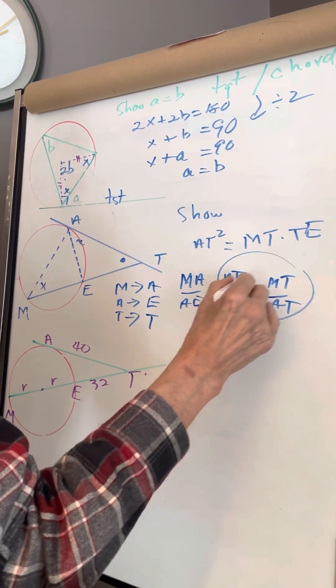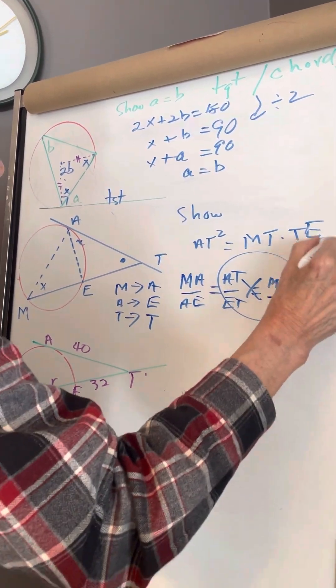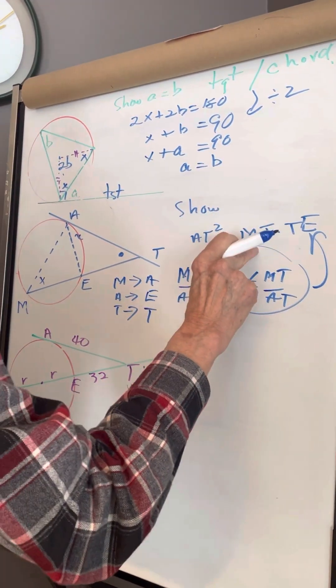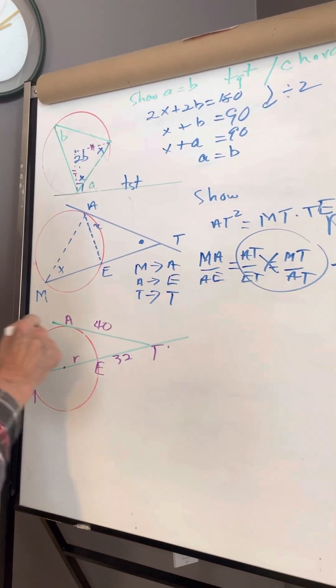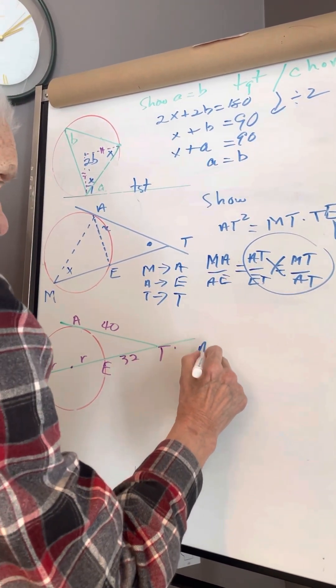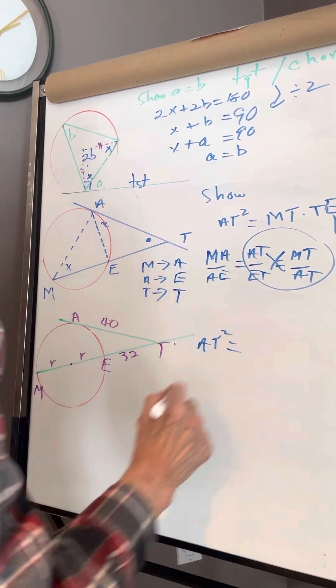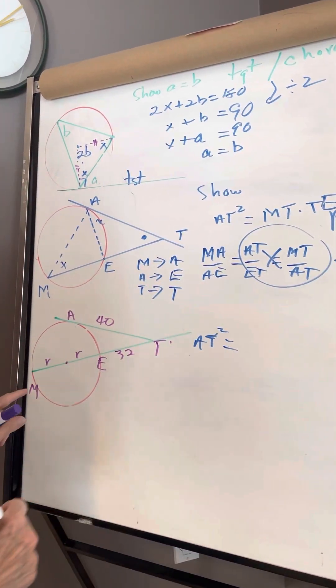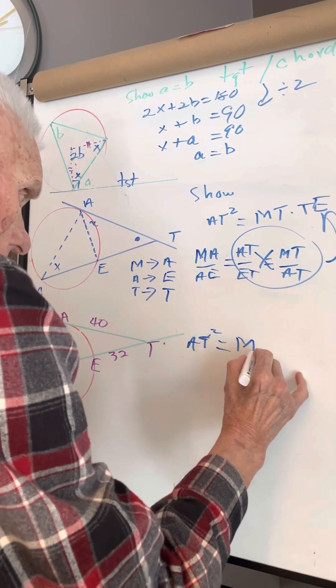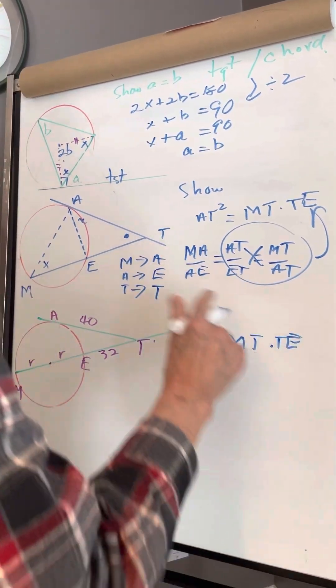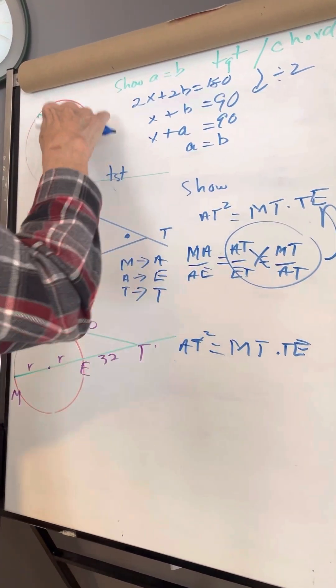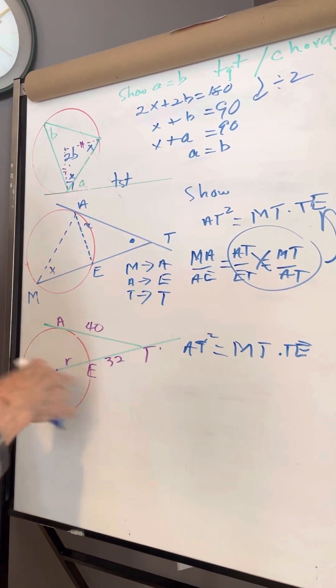This cross multiplication gives me this. I need this to do this question. So here is the tangent: AT² = MT × TE.